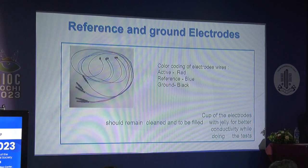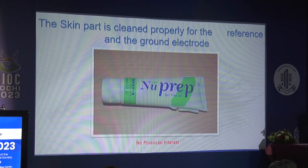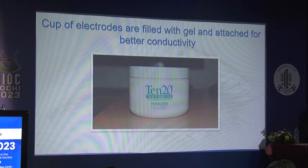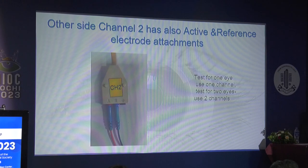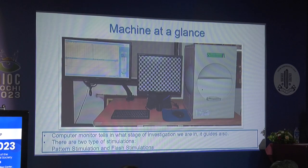Regarding reference and ground electrode color coding: active electrode wires are usually red, reference is blue, and ground is black. The skin is cleaned with skin prep gel and the cup electrodes are filled with conductive gel for better conductivity, using 10-20 conductive gel. Adapters are one-channel or two-channel — one channel for testing one eye, two channels for testing both eyes. The machine has three parts: the monitor, the CRT, and the Ganzfeld bowl. The computer monitor guides us through the test; the CRT and Ganzfeld bowl take care of pattern stimulation and flash stimulation respectively.